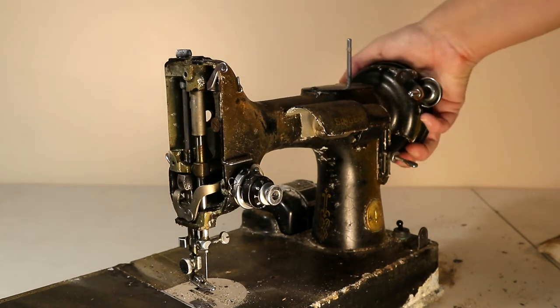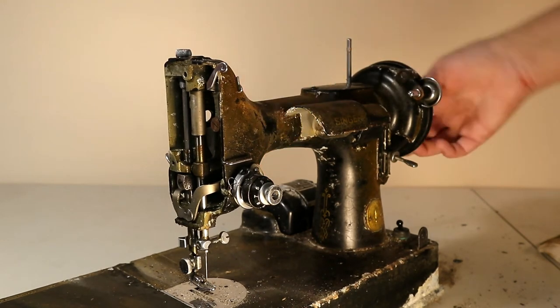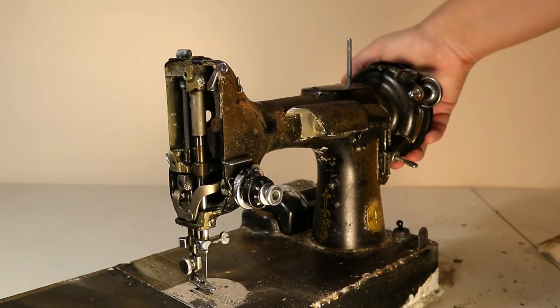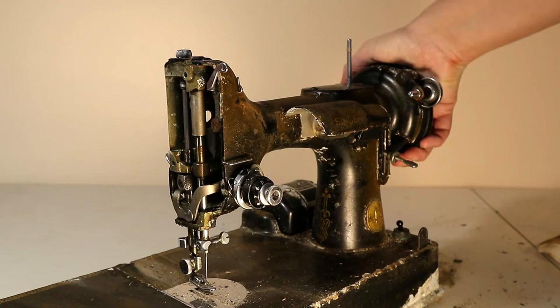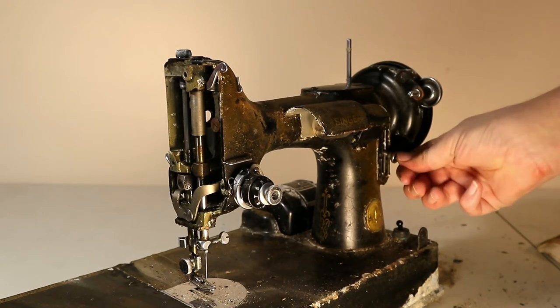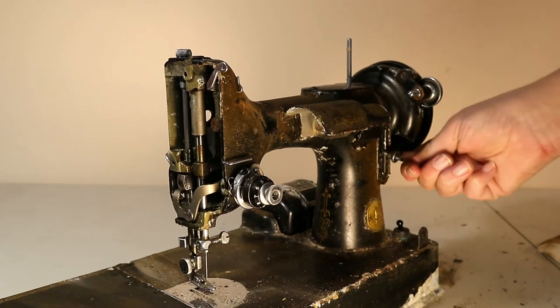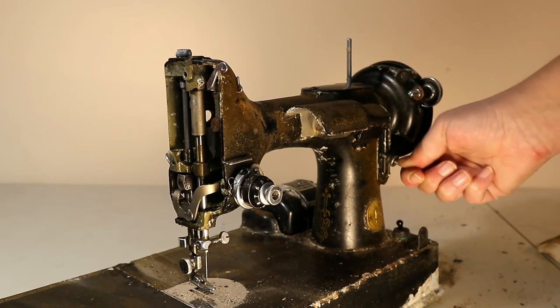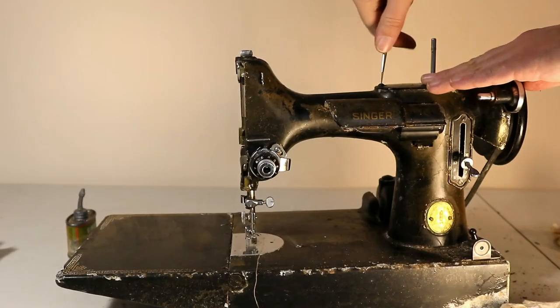Now let's see if we can get the machine turning. This balance wheel turns with the top coming towards the operator. Turning it the other way can cause thread jams and unnecessary wear on the machine. I'd be happy if it turned any way at all. I don't want to force it in case I break something difficult to repair.